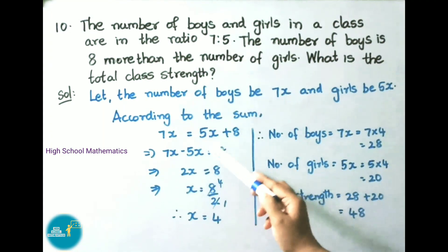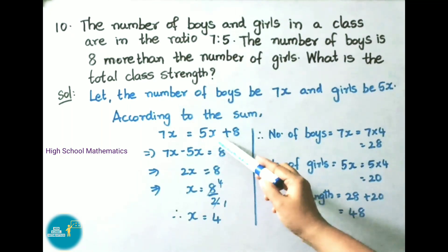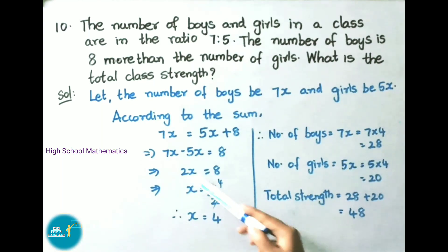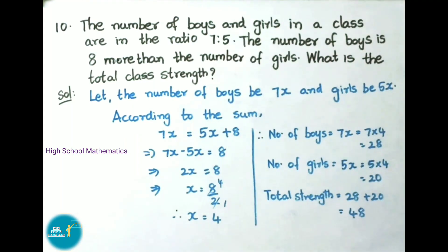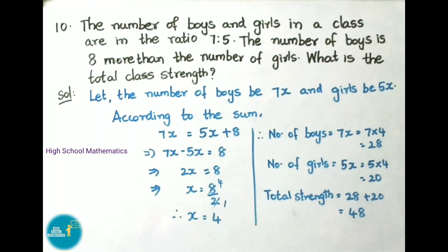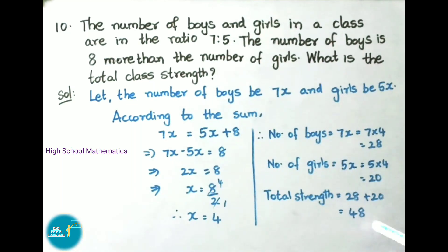That implies 7x minus 5x equals to 8. Here 5x on transposing became minus 5x. 7x minus 5x is 2x, that equals to 8. x equals to 8 by 2. Here 2 is multiplying; on transposing it becomes divided by. 2 times 4 is 8. Therefore x value is 4. Number of boys is 7x, that is 7 into 4, which is 28 boys. Number of girls is 5x, that is 5 into 4, which is 20 girls. Total class strength is 28 plus 20, which is 48.